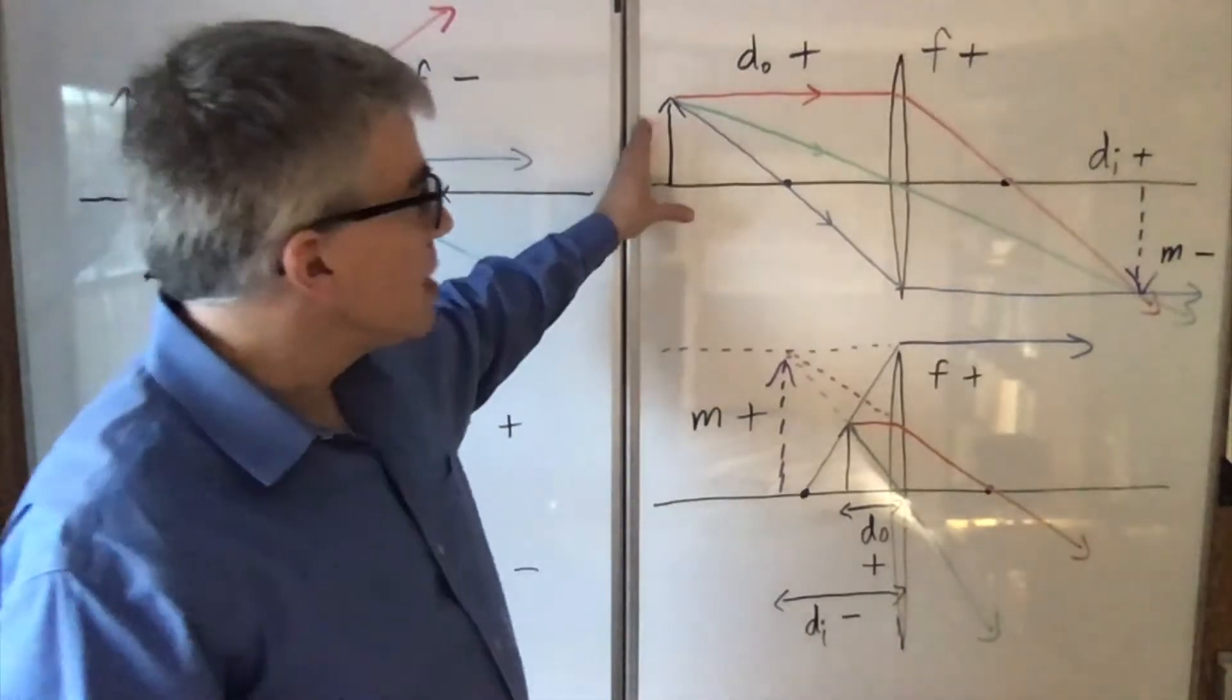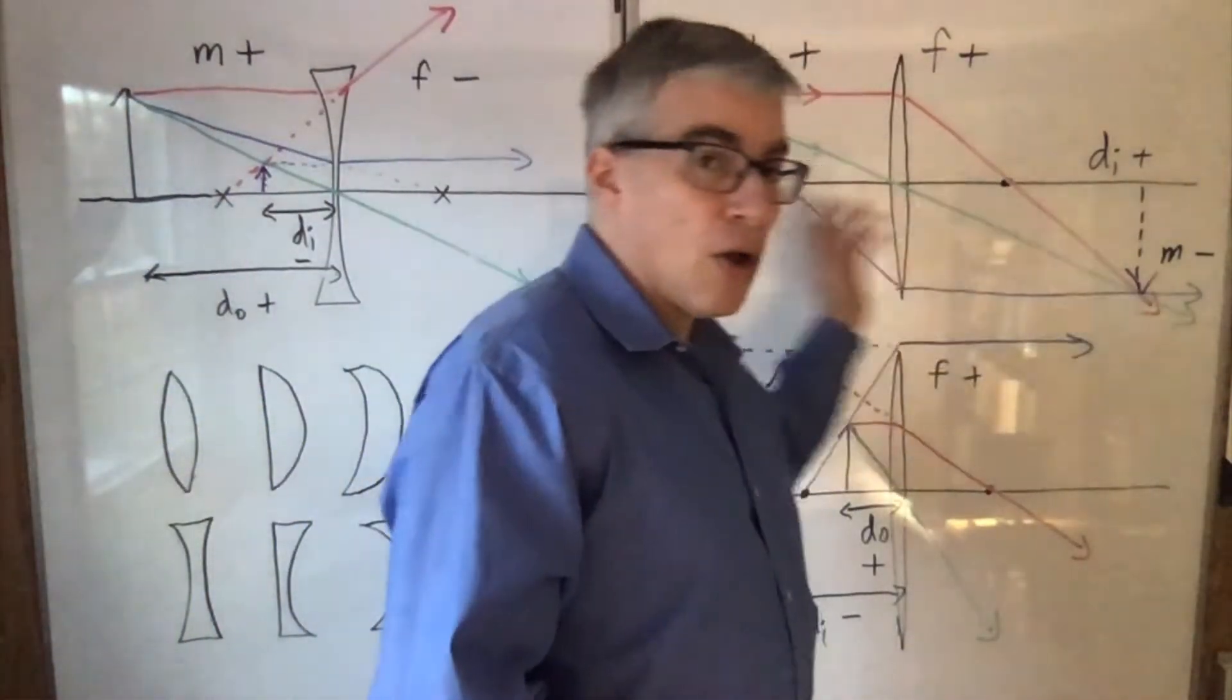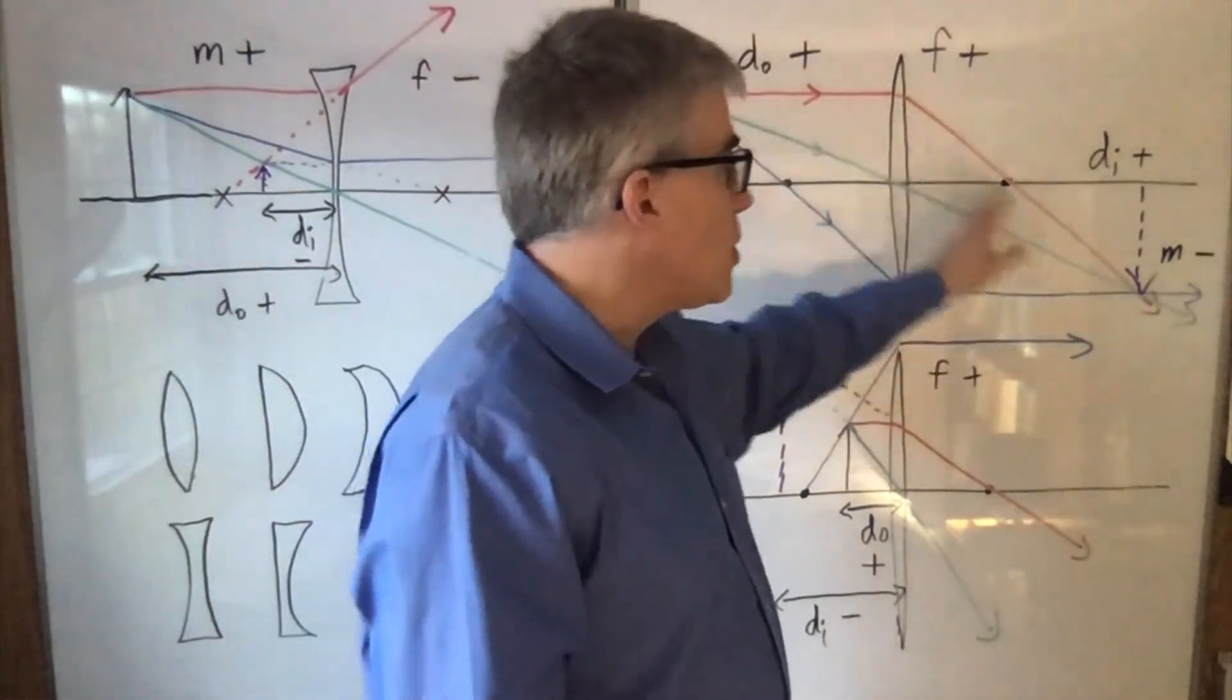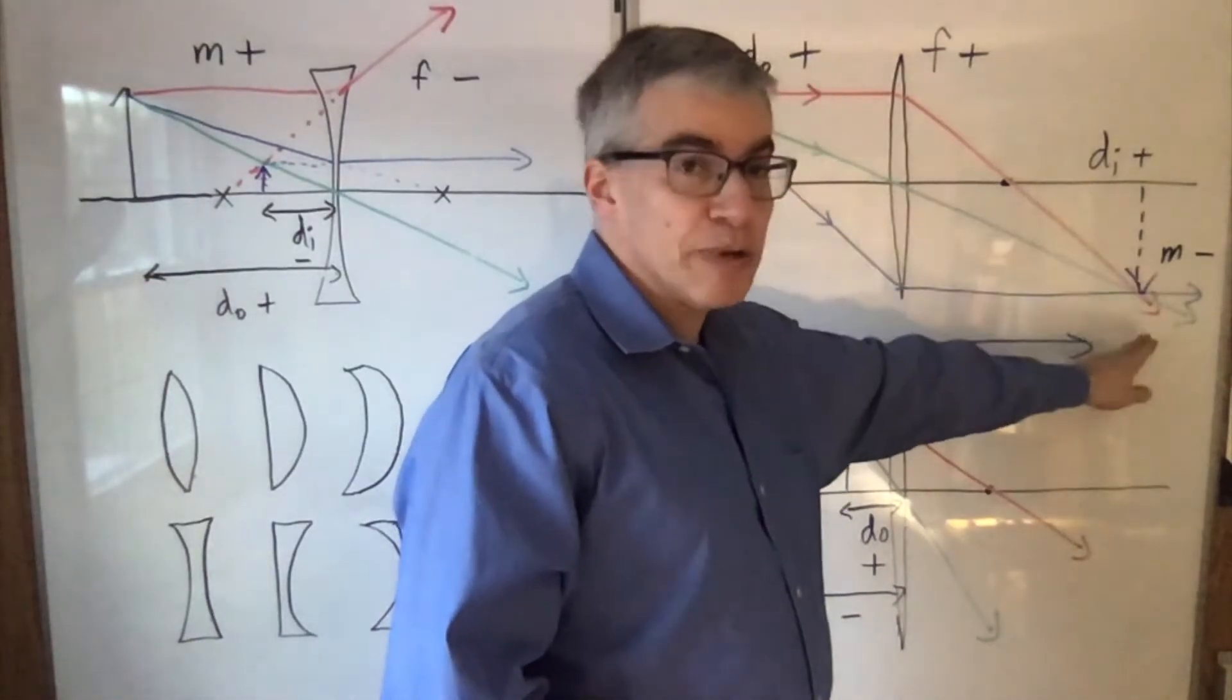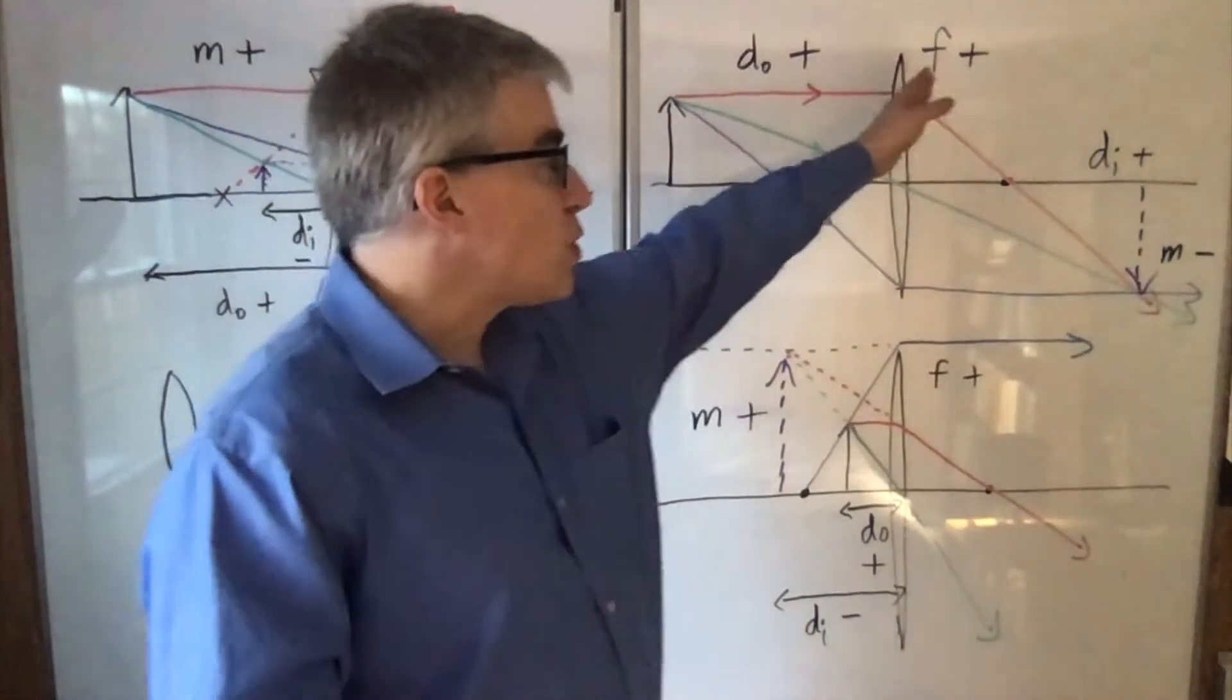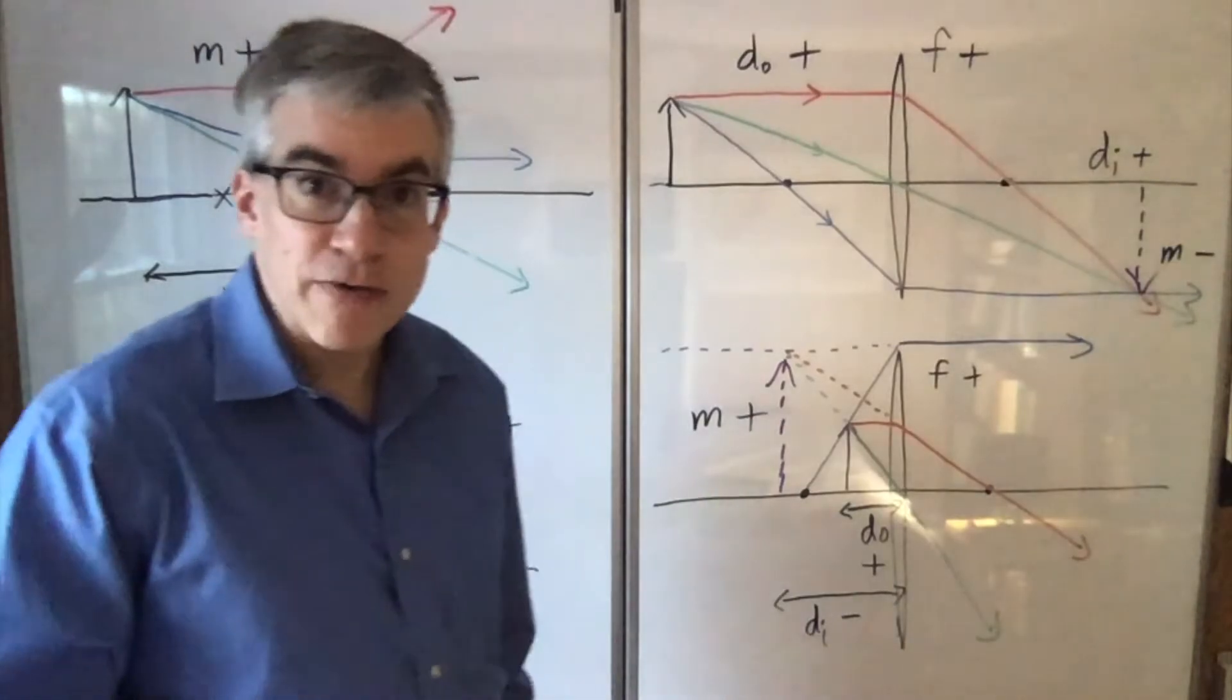If it's beyond the focal point, the light goes through. This is the all positive case. Positive DO, positive DI forms a real image on the far side, and the focal length is positive because we're talking about a converging lens.